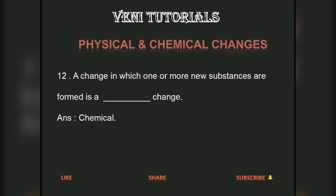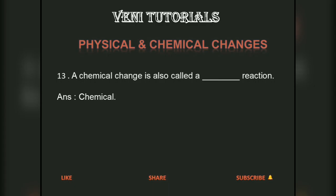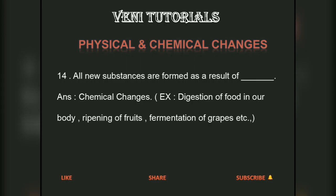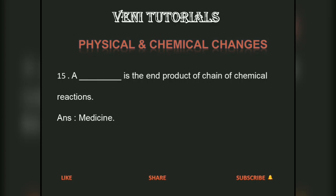A change in which one or more new substances are formed is a chemical change. A chemical change is also called a chemical reaction. All new substances are formed as a result of chemical changes. An example is digestion of food in our body; a medicine is the end product of a chain of chemical reactions.